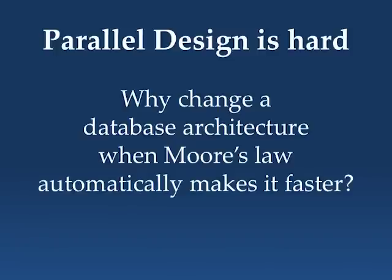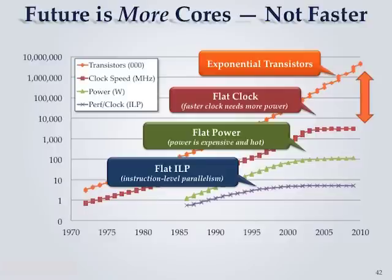Why would you change the database architecture? Doesn't Moore's Law make everything faster? It used to, but 10 years ago things changed. We have Moore's Law creating exponential growth in transistors, but cost flattened out because of heat. Then instruction-level parallelism flattened out. That gap between exponential transistor growth and the flattening of everything else forces us to go to multiple cores.